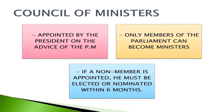Only members of the parliament — that means those who have won the election — will be the Ministers. If a non-member, that means someone who is not selected by the people or who did not win the elections, is appointed as Minister, then he or she must be elected or nominated within six months.